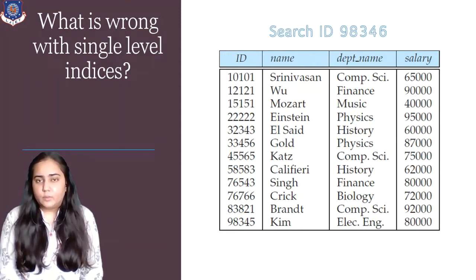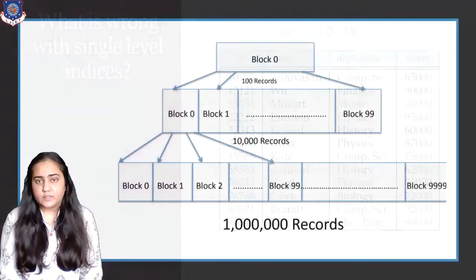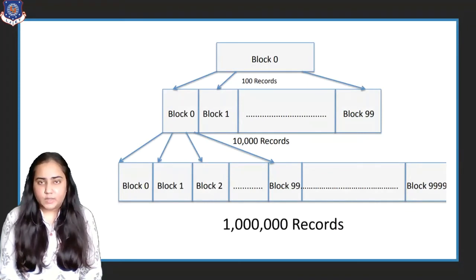And that's why we use multi-level indices, because it distributes the load and you don't have to read each and every row of the table. In practice, the tables are not so small, they are really large. And when there are large tables containing a lot of data, if you need to go through all the data every time you want to search for one person, it's really not an efficient system. Which is why we use multi-level indices.